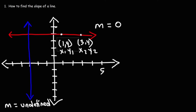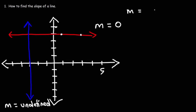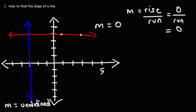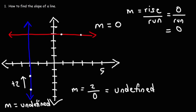Now what about a vertical line? For the horizontal line the rise is zero; for the vertical blue line, the run is zero — not the rise, but the run. If we pick two points, we have a rise of positive two, but because you're not moving left or right — just going straight up — the run is zero. Whenever you have zero in the denominator of a fraction, the value is undefined. Two divided by zero — we don't know what that is — so the slope of any vertical line is always undefined.